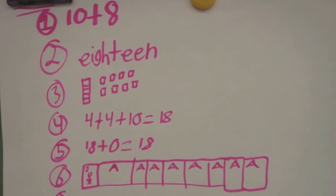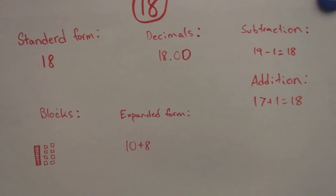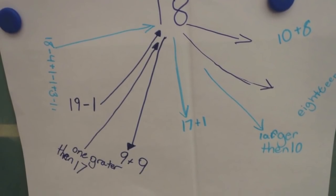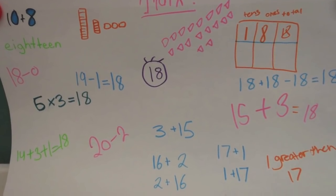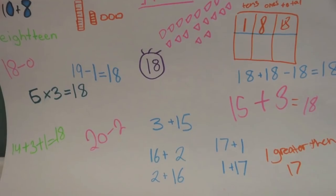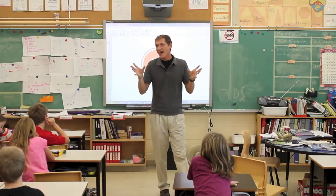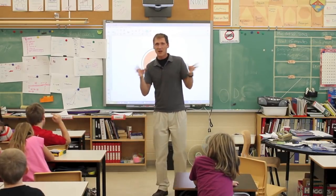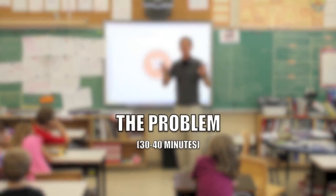Some of the ways that people represented 18: expanded form, place values, 10 plus 8. People found different ways to add two numbers together to get 18. Some people used base 10 blocks, some people put a place value column. So your brains are now activated. You're thinking about how to break up numbers in different ways.